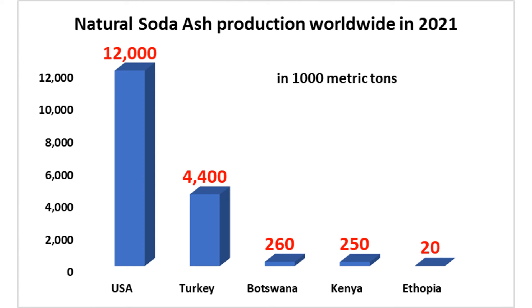Regarding the world's top soda ash producing countries, in 2021 the United States led all countries, producing over 12 million metric tons.